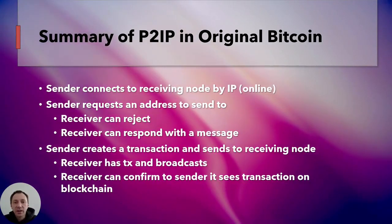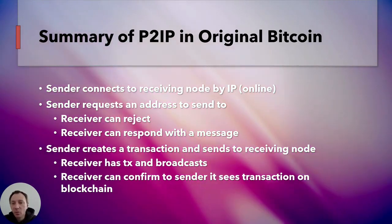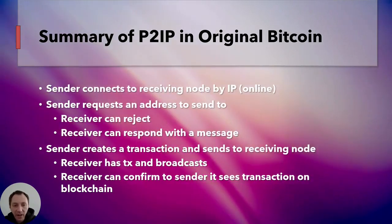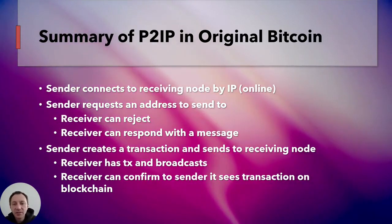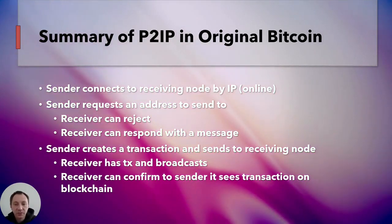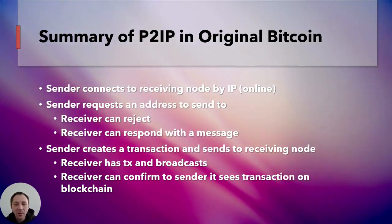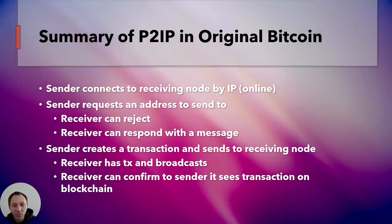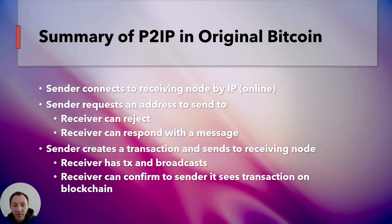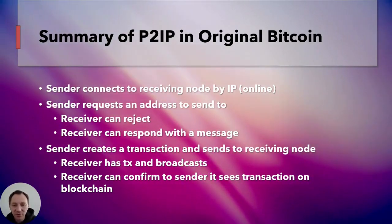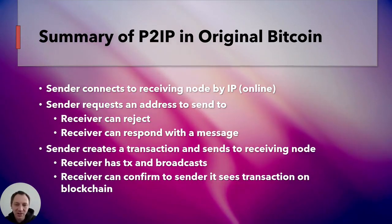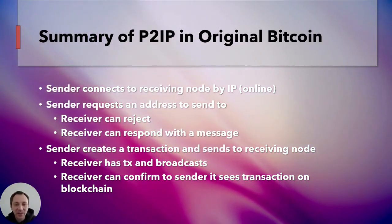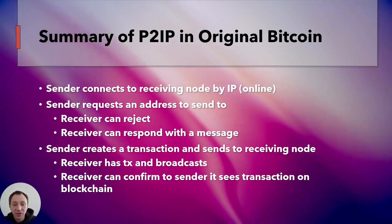To summarize Pay2IP in the original Bitcoin: the sender connects to the receiving node by IP address if they're online; the sender can request an address to send to; the receiver can reject the payment; if they accept, they respond with a message like 'thanks for the payment for XYZ'; the sender creates a transaction and sends it to the receiving node; the receiving node broadcasts it; and the receiver can confirm to the sender that yes, it's on the blockchain.